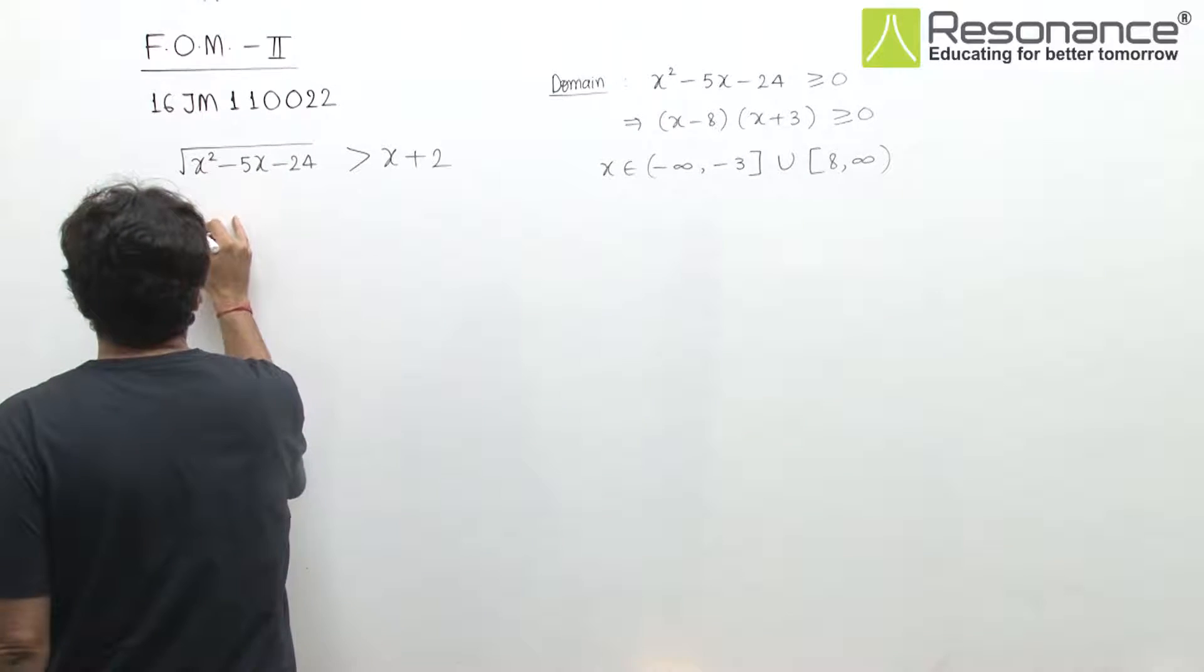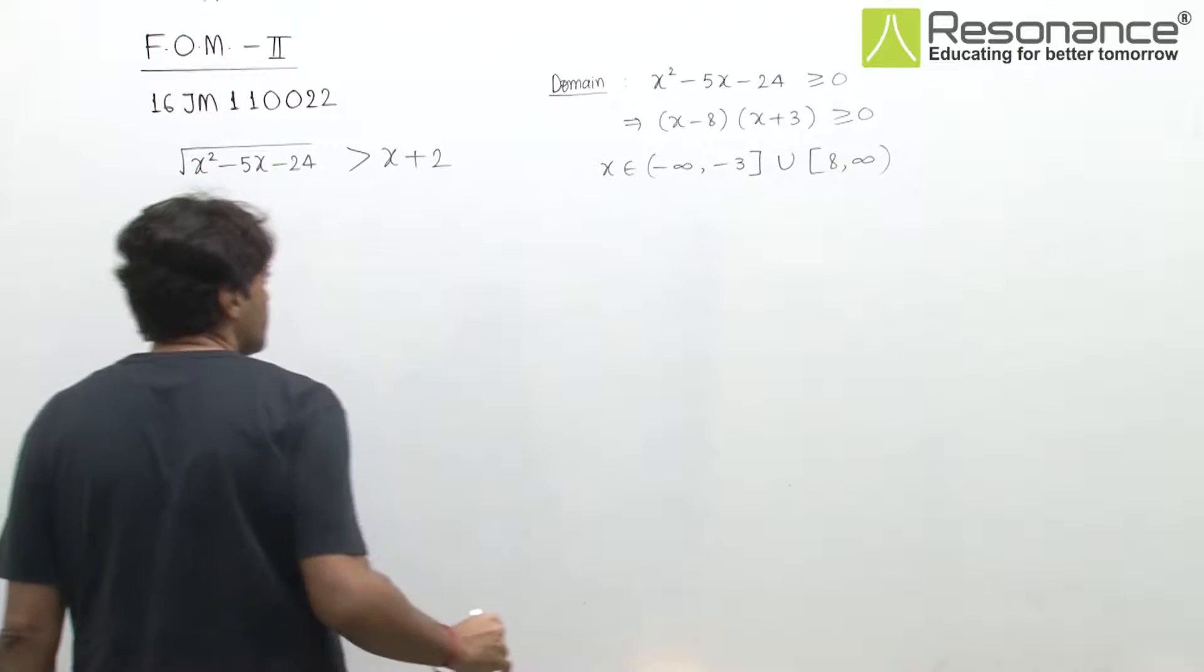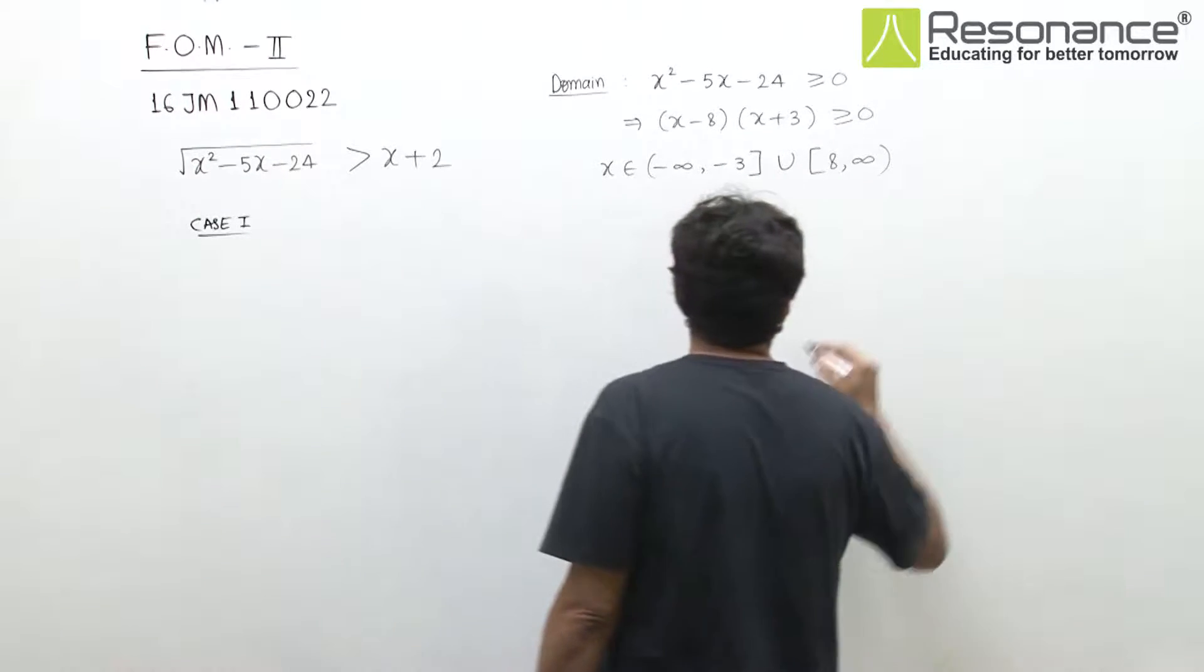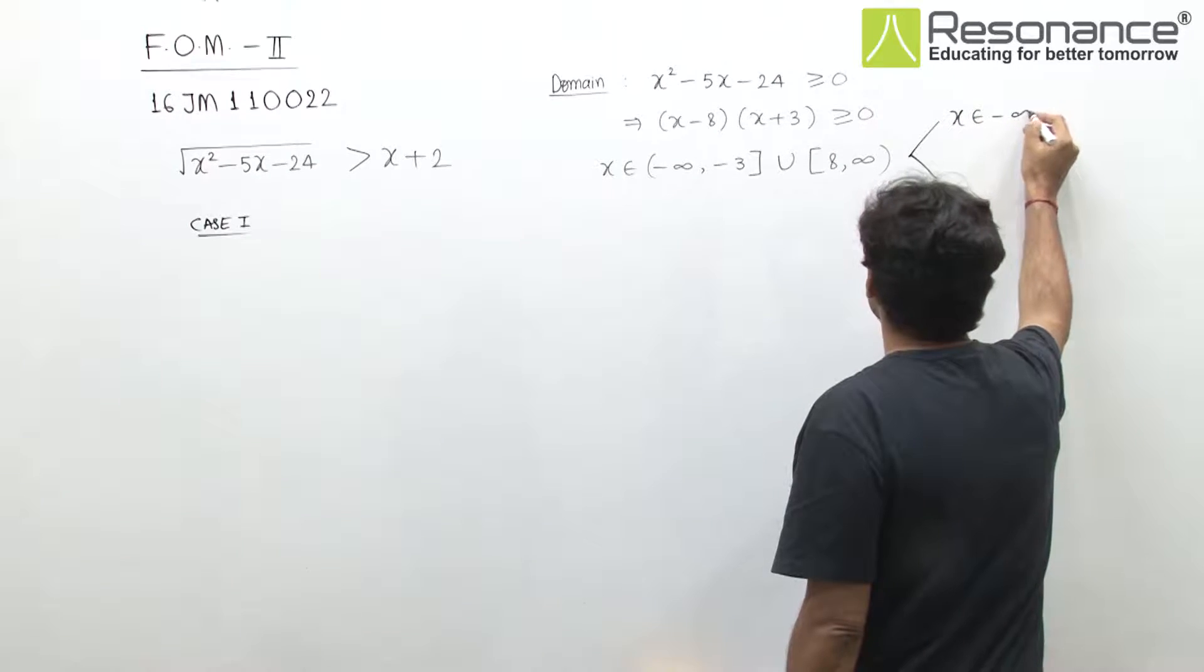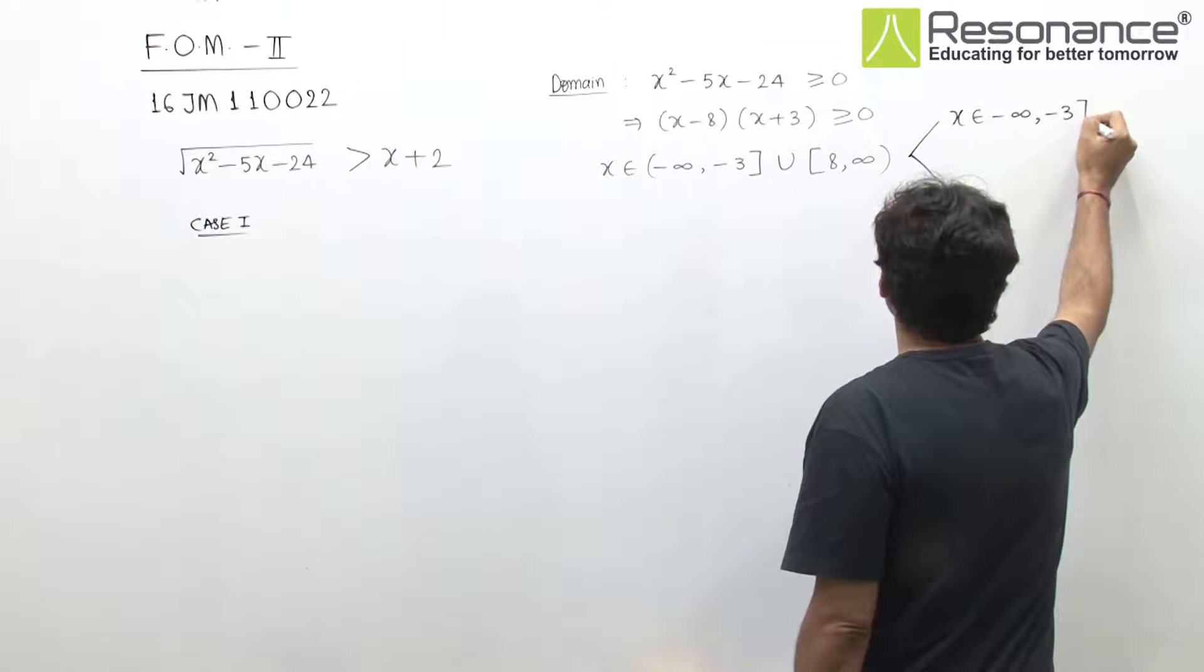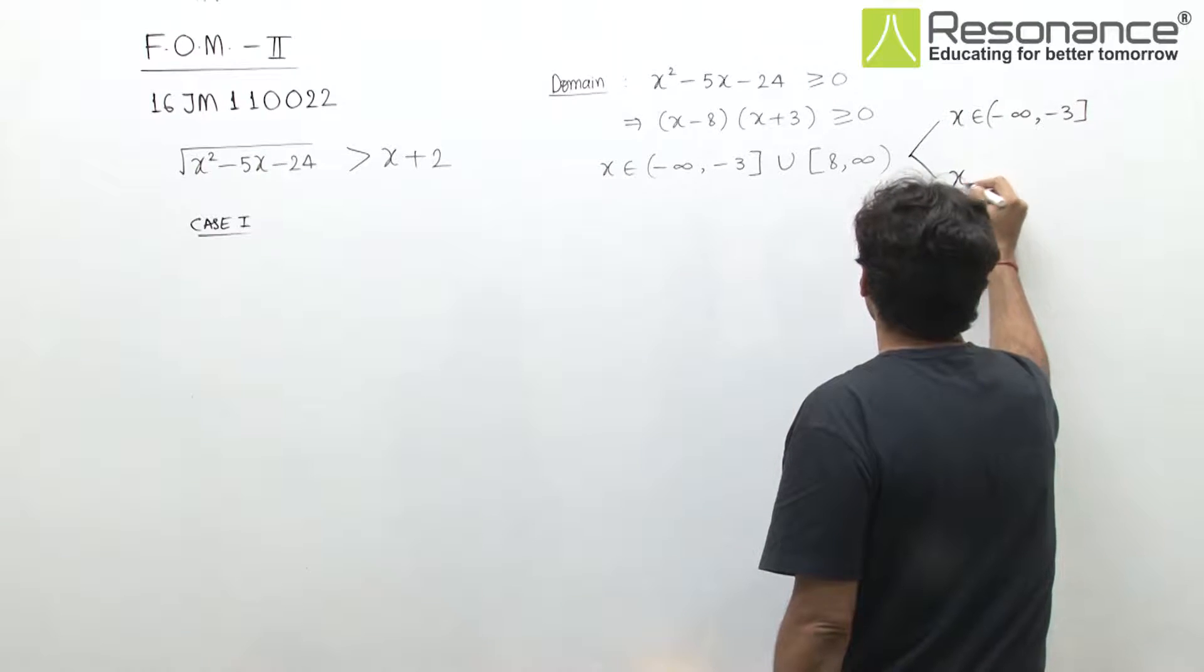So first I take Case 1, where I take this part of the domain. I divide the domain into two parts: one part is (-∞, -3] and the other part is [8, ∞).